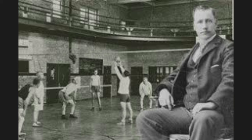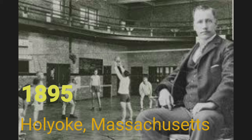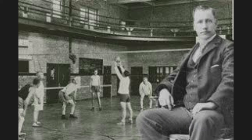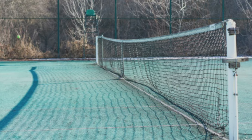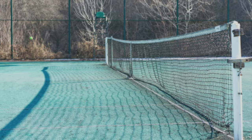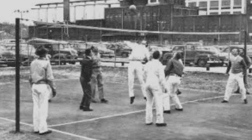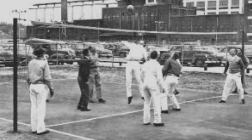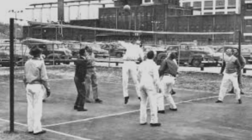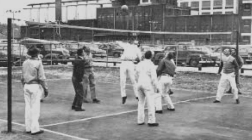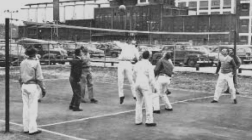His creation was finally completed in the winter of 1895 in Holyoke, Massachusetts. William had a set of ground rules made up to facilitate the game. He used a tennis net lifted to the height of 6 feet and 6 inches, and chose a court roughly 30 feet wide and 60 feet long, to ensure the game could be played in gymnasiums all around the country.